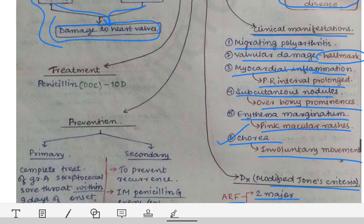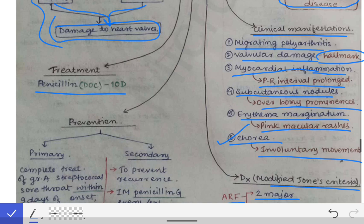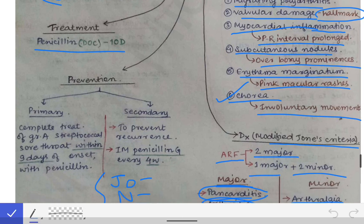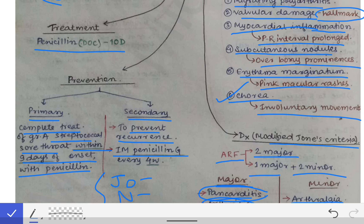Treatment of acute rheumatic fever is with penicillin, the drug of choice, given for 10 days. For primary prevention, if someone has Group A Streptococcal sore throat, it should be treated with penicillin within 9 days of onset to prevent future acute rheumatic fever. For secondary prevention — to prevent recurrence — intramuscular penicillin G is given every four weeks.